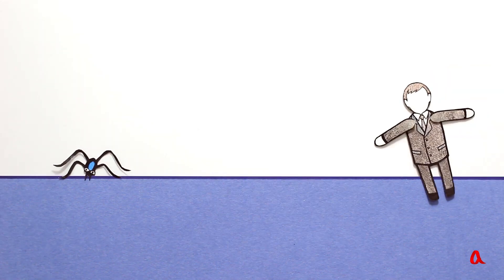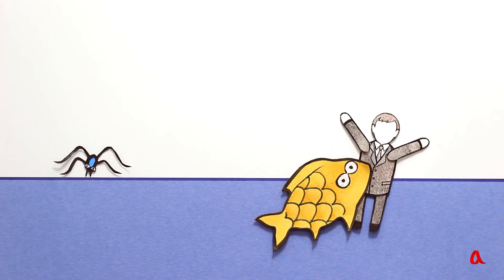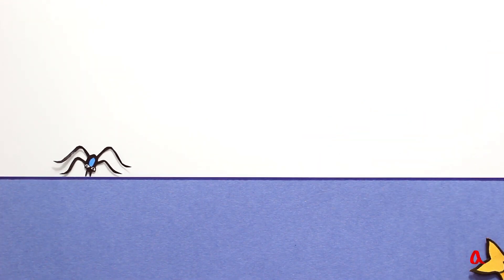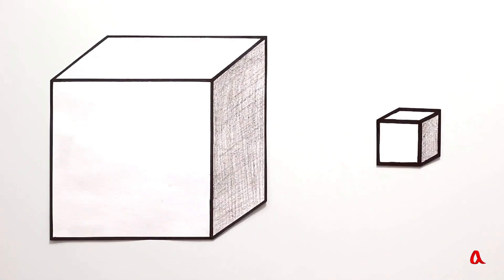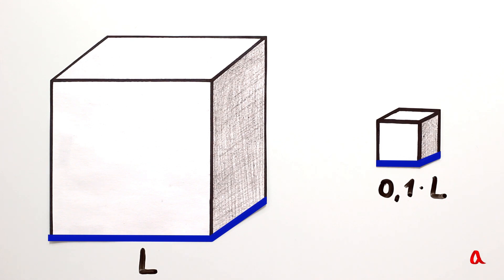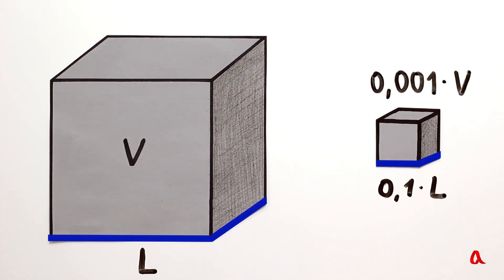Let's try to figure out why a water strider can stride along water while a human can't. The thing is that when the size of a body gets ten times smaller, the length of the line along which the body is watered gets ten times shorter, whereas its volume and weight decrease one thousandfold instead of tenfold.